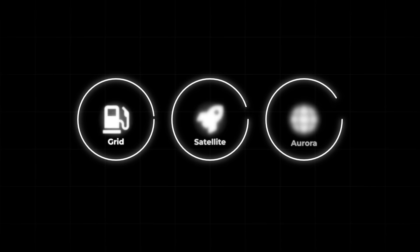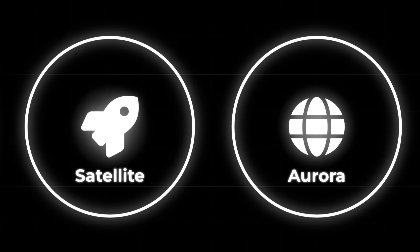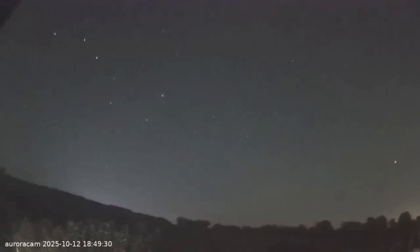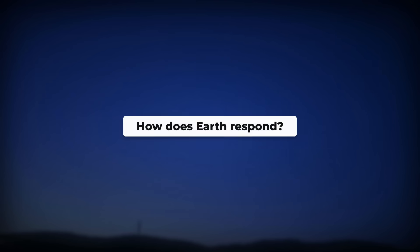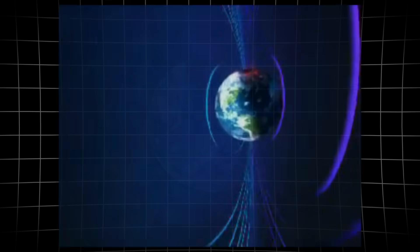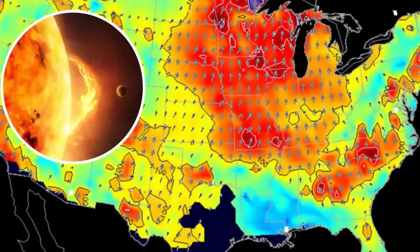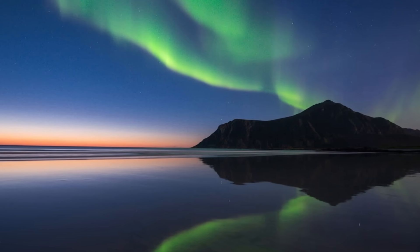They translate to real-world effects: power grid fluctuations, satellite drag, and most visibly, auroras stretching far beyond their usual haunts. On the night of October 12th, curtains of light rippled as far south as Michigan and Maine, a direct consequence of the efficient coupling between Sun and Earth. The result? A geomagnetic system primed for action, where even a moderate solar wind can trigger a chain reaction across the planet's upper atmosphere. Each spike in velocity, each shift in polarity, sends a ripple through the global electrical environment.